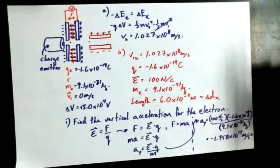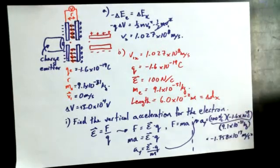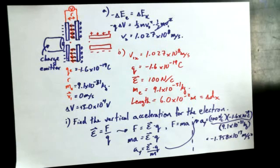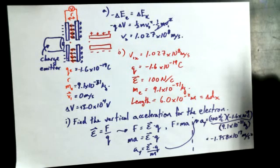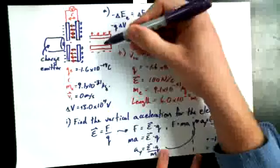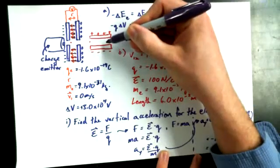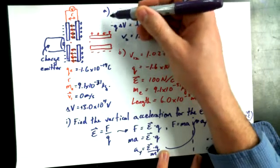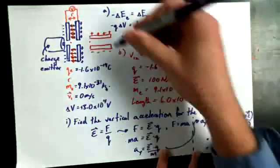We know that 1.758 times 10 to the power of 13 meters per second squared is just going to be its acceleration in the upward direction. So, having our conversation back with the picture, knowing that it's a negative charge, it's going to get attracted upwards or repelled upwards by the bottom plate and attracted by the upper plate.